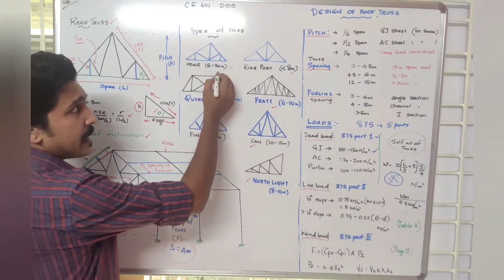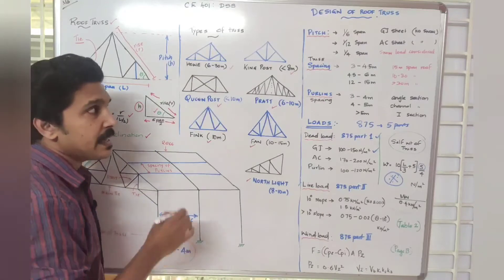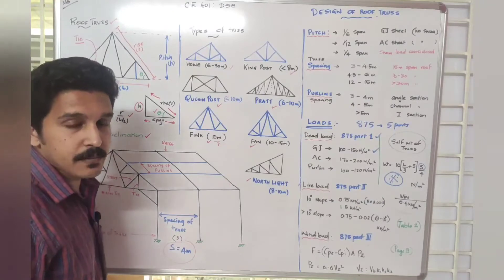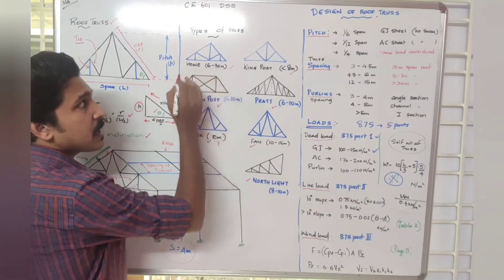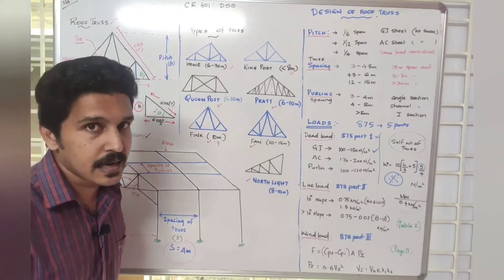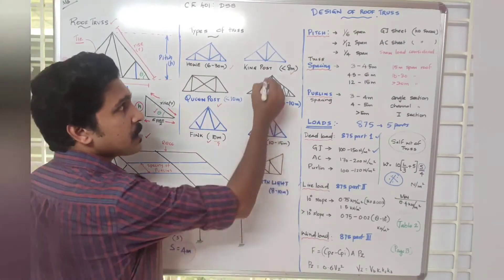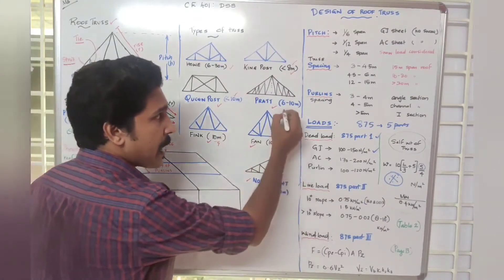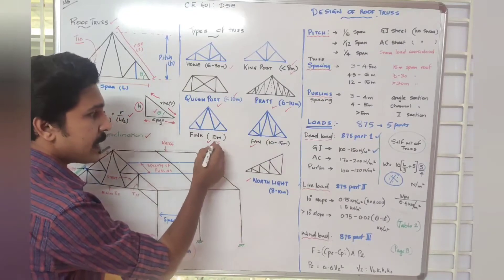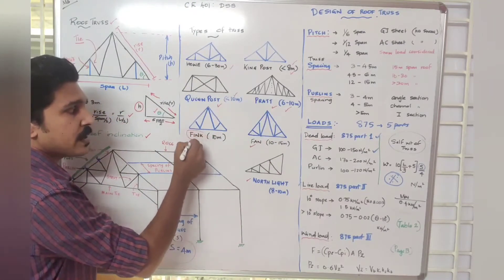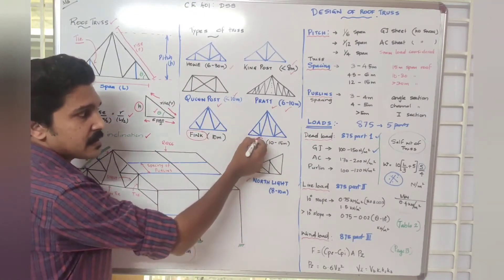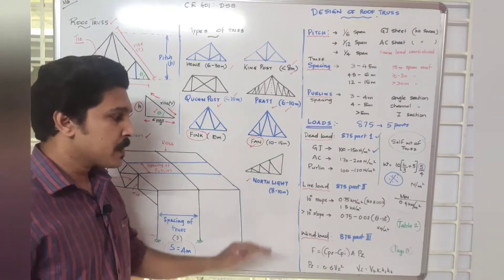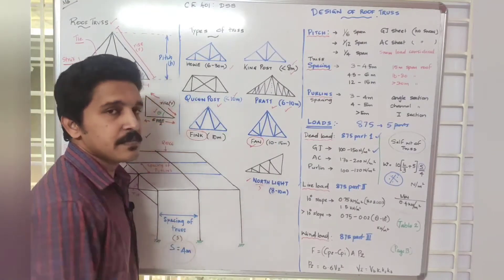The selection of the type of truss depends on the span of the structure. For spans of 6 to 30 meters, different trusses are economical: King Post Truss is suitable up to 8 meters, Queen Post Truss up to 10 meters, Pratt Truss for 6 to 10 meters, and Fink or Fan Truss for around 10 meters. For asymmetric roofs slanting on one side, a North Light Truss is used for 8 to 10 meter spans.